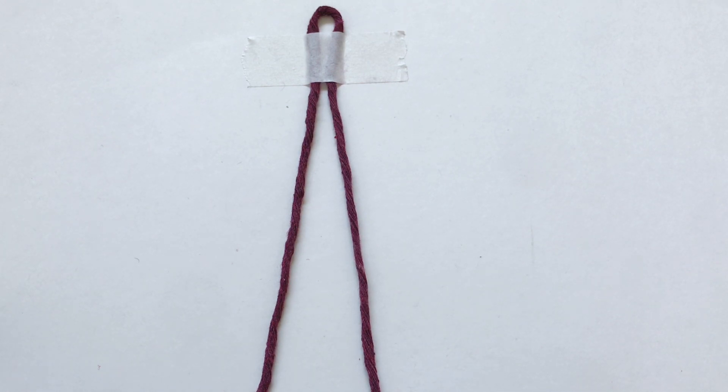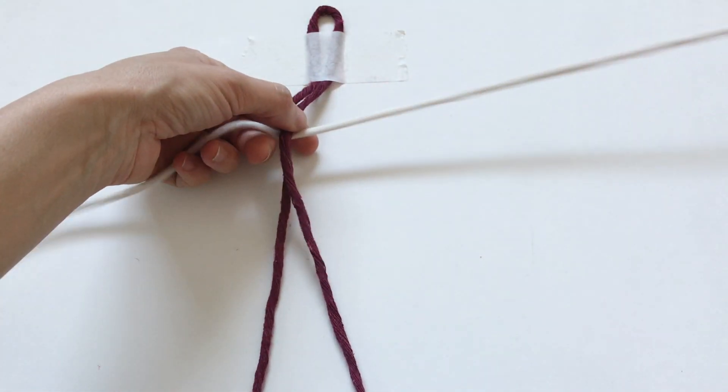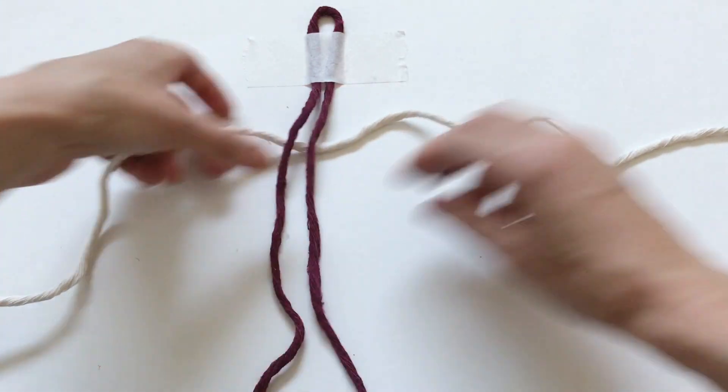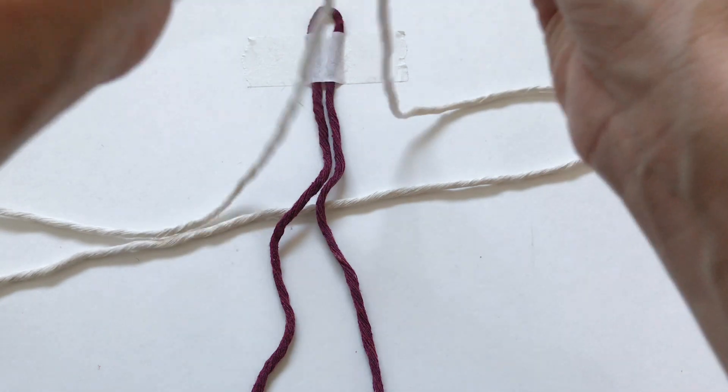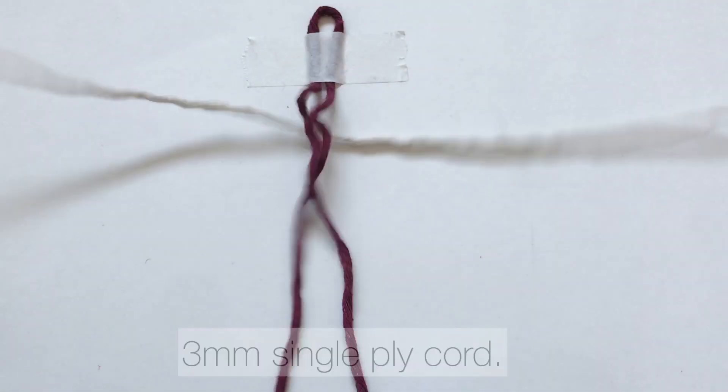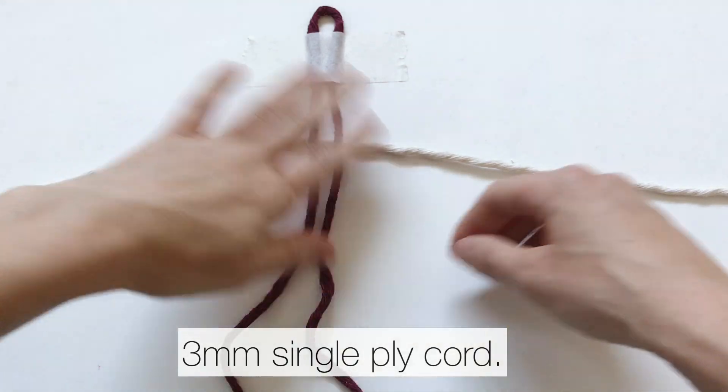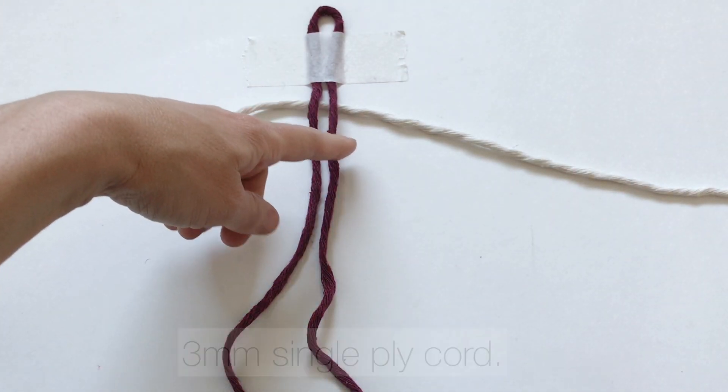For this tutorial, I thought it would be easier to tape it down onto a flat surface just to show you how this works, a little bit easier than me holding up cords and blocking the camera from a dowel. I've attached this berry color knot - these are both three millimeter single ply. I've just taped it right down.